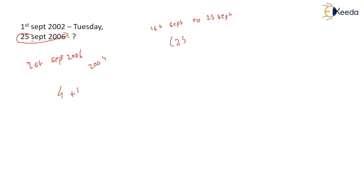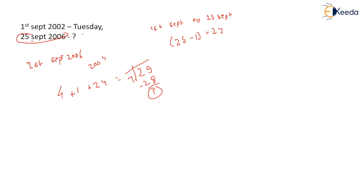From 1 September to 25 September: 25 minus 1 equals 24 days. So add 24. Now solve: 24 plus 1 leap year plus 4 years equals 29. Divide 29 by 7 — 28 is separated, remainder is 1. So one day ahead of the given day. On 25 September 2006, the day will be one day after the reference day.